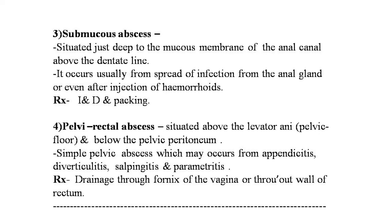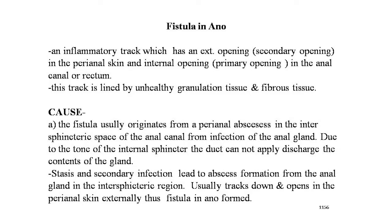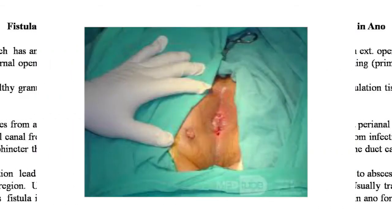Fistula in ano is an inflammatory tract which has an external opening (secondary opening) in the perianal skin and an internal opening (primary opening) in the anal canal or rectum. This tract is lined by unhealthy granulation tissue and fibrous tissue. The fistula originates from a perianal abscess in the intersphincteric space of the anal canal from infection of the anal gland. Due to the tone of the internal sphincter, the duct cannot discharge the gland contents, leading to stasis, secondary infection, abscess formation, and a tract that opens in the perianal skin — thus forming fistula in ano.